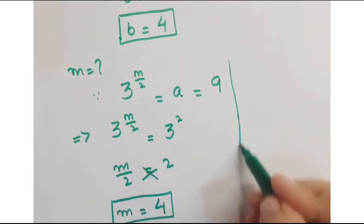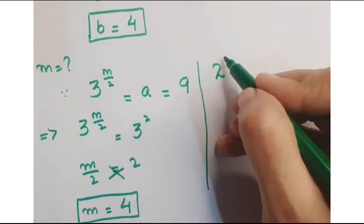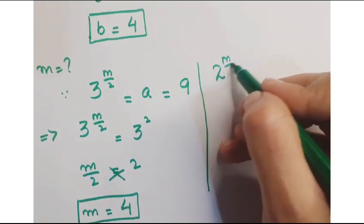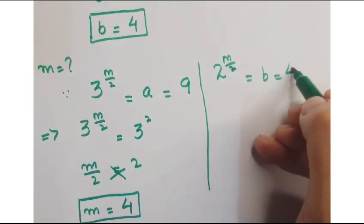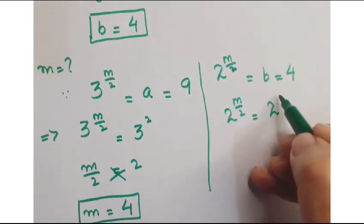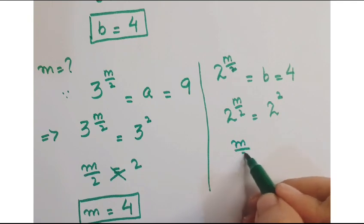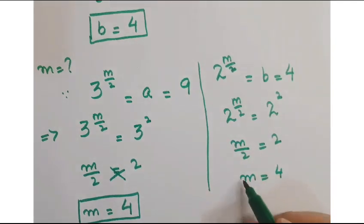Similarly, we can say 2 to the power m upon 2 is equal to 4. So we can say 2 to the power m upon 2 is equal to 2 square. Same basis. So just equate their exponents. So again we get m is equal to 4.